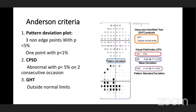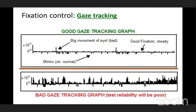Then we have fixation control — gaze tracking. Spikes pointing upward indicate a gaze error; spikes pointing downward indicate the patient is blinking. A straight line indicates good fixation. A bad gaze tracking graph with many gaze errors means poor test reliability, and the test needs to be repeated.